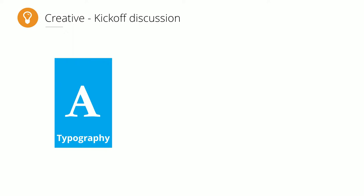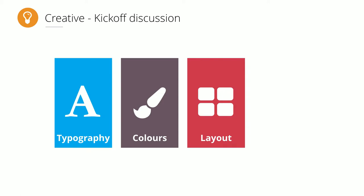In the creative kickoff we talk about four main topics: typography, color, layout, and imagery — the components that make up a visual identity system for any brand or website. By showing examples of other U of T websites, people who don't have design language as part of their training can participate in meaningful discussions about these four topics, and actually make decisions collectively as a group to narrow the range of possible creative options.